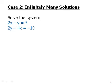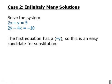Case two is the infinitely many solution. So, I'll say pause the video and try to solve this system on your own. Okay, let's talk about this. The first equation has a negative y, so this is an easy candidate for substitution. We get y equals 2x minus 5. Very good. Plug this right into the second equation. Very good. Then distribute. Then cancel.